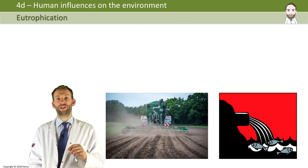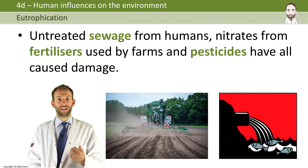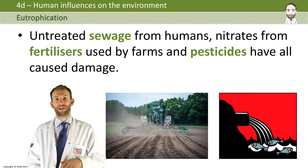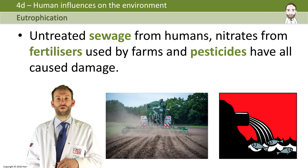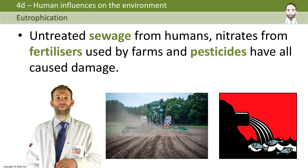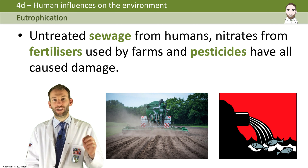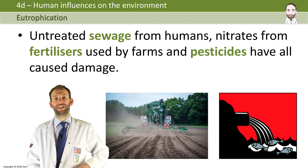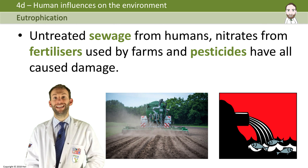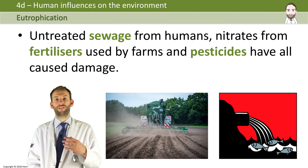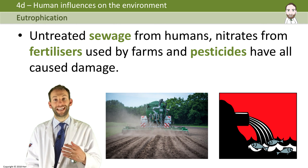Untreated sewage from humans, nitrates from fertilizers used by farms, and pesticides have all caused damage. Water in streams and rivers can become polluted with nitrates and phosphates from fertilizers that have leached from farmland into rivers and lakes.